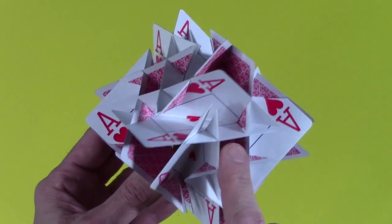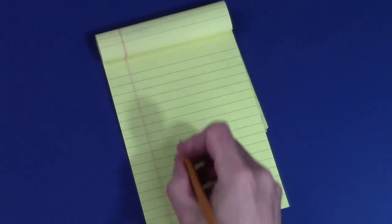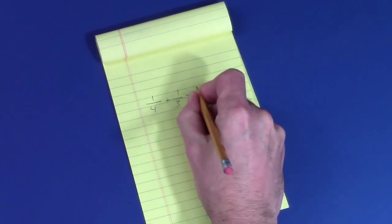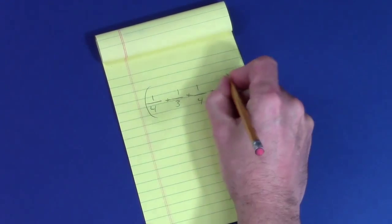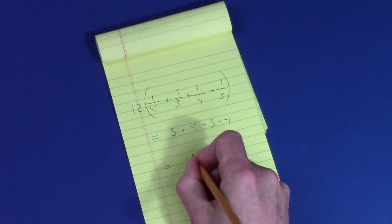One card contributes a quarter of the four-sided openings but a third of the three-sided openings. So each card contributes a quarter plus a third plus a quarter plus a third to the total. And when you multiply that by 12 cards, you get 14 total.